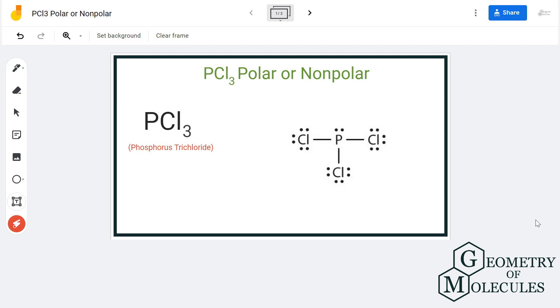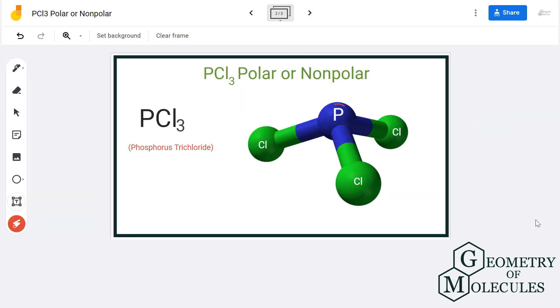To understand it better, we can also compare the electronegativities of chlorine and phosphorus atoms.